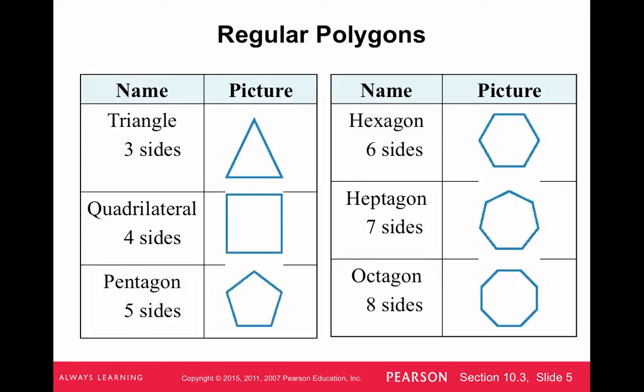So just some common names. This is not something I'll test on, but just so you know: triangle for three sides, quadrilateral for four sides, pentagon for five sides, hexagon for six, heptagon for seven, and octagon for eight.